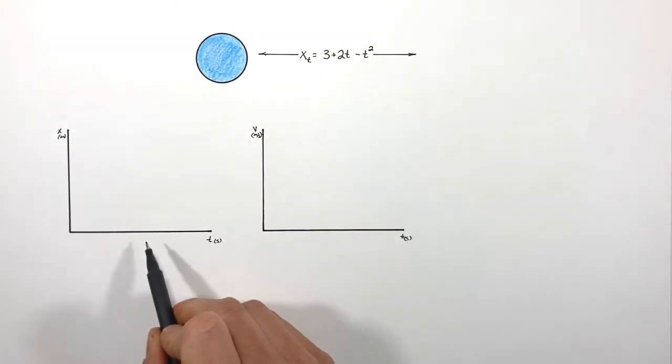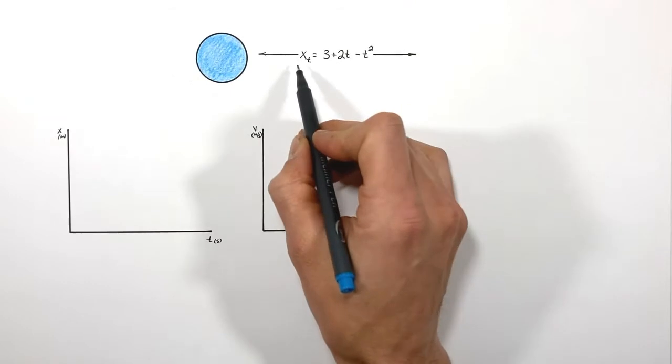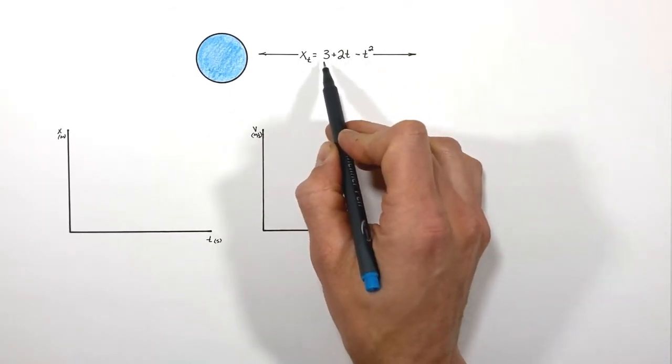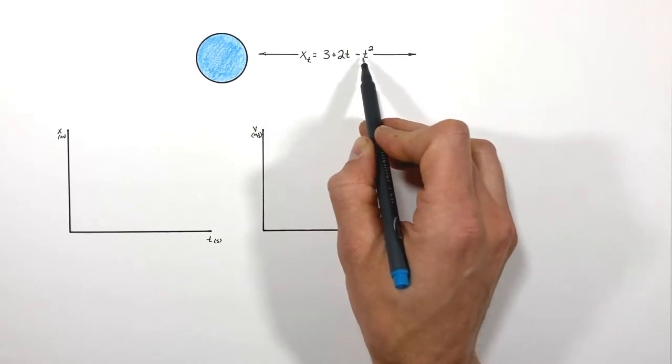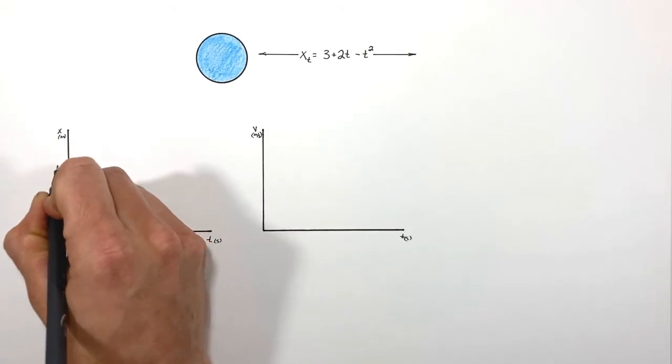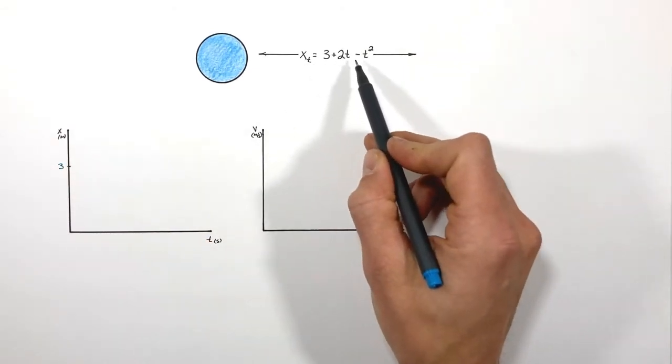All right, so starting over here with the position versus time, we can see this position versus time function at a time of zero is in fact 3. That is to say, if I was to plug in zero for t here, I would come up with an initial position of 3, and as time goes on that position is going to change.